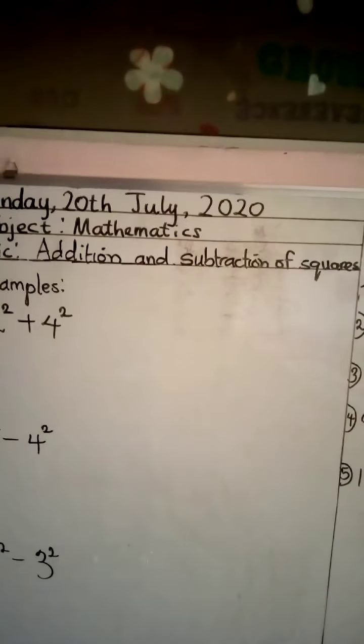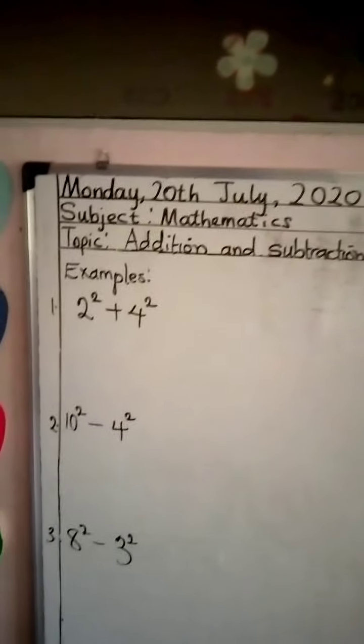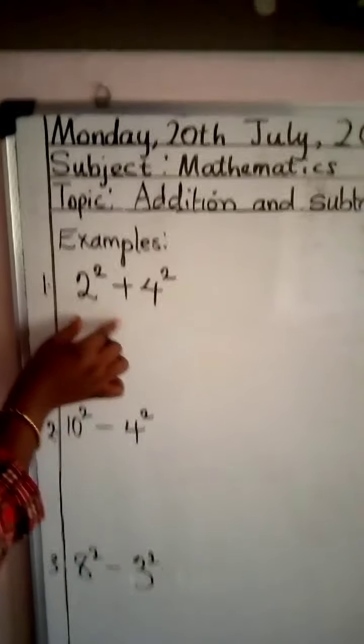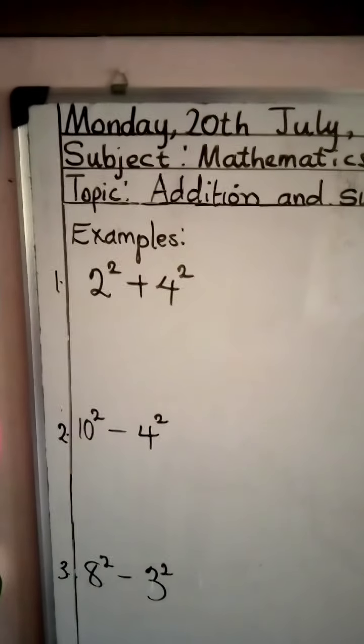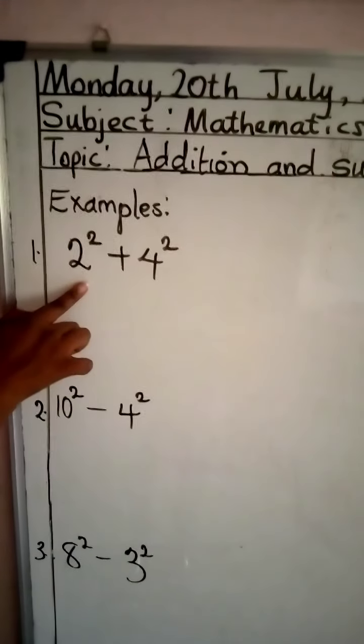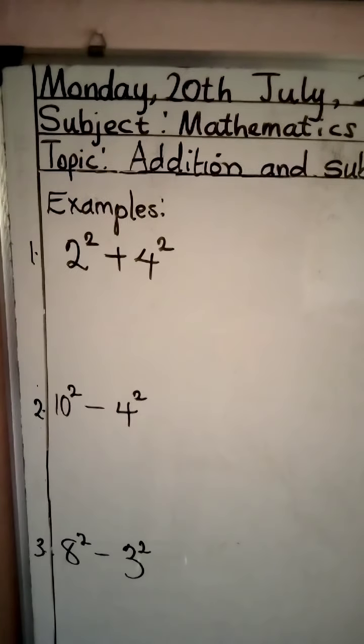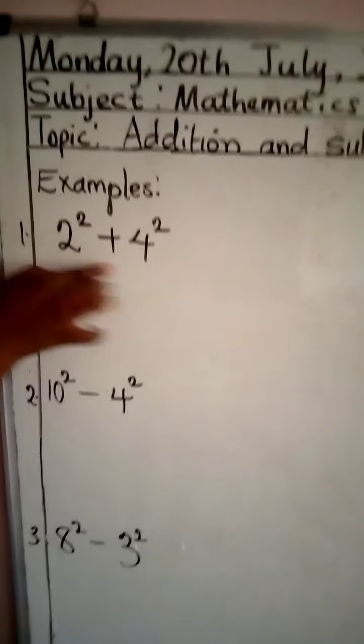Addition and subtraction of squares. I have some examples on the board. Example 1, 2 and 3. Okay, now I have 2 square plus 4 square, which is the square of 2 and 4. We have to bring them together. Now, how do I solve this?